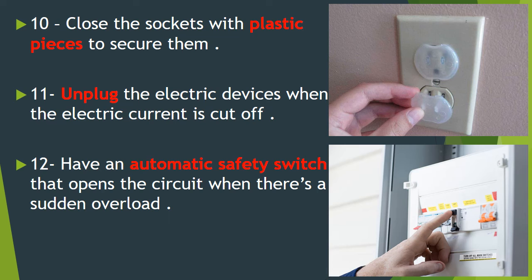Number 11: Unplug or disconnect electric devices when the electric current is cut off, to avoid electric overload when the electricity comes back. Number 12: Have an automatic safety switch that opens the circuit when there is a sudden overload. We all have this in our homes — it opens the circuit to cut off electricity when there is an overload.